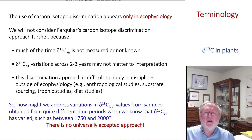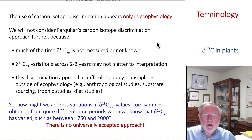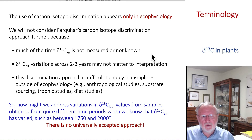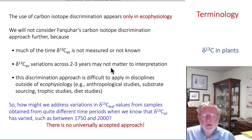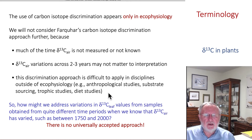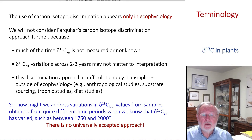Throughout the rest of this lecture, we will not be using carbon isotope discrimination, because it's largely only found in the ecophysiology literature — and not even all of that. We will not consider Farquhar's discrimination term further for three broad reasons: much of the time, 13C of air is not measured or known in a study — it's guessed at or inferred; 13C variations in the atmosphere do not change very much during the growing season over a two- to three-year period; and more importantly, there is a translation issue — the term discrimination is difficult to apply when looking at carbon isotope abundances in disciplines outside of ecophysiology, such as anthropological studies, substrate sourcing studies, trophic studies, and diet studies.